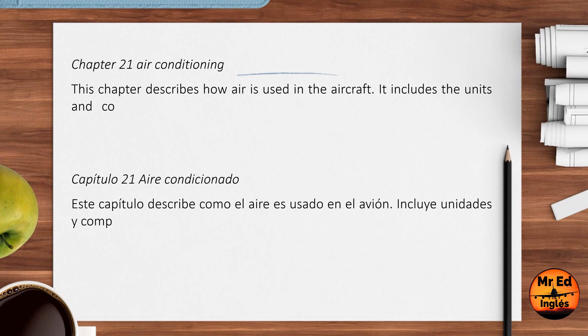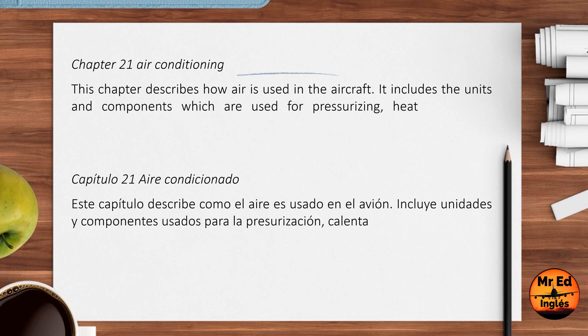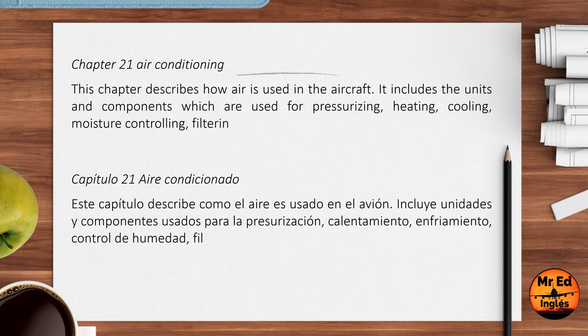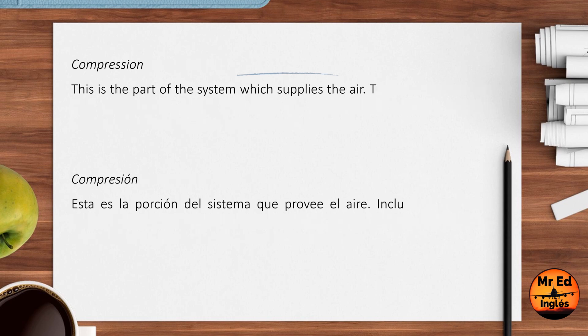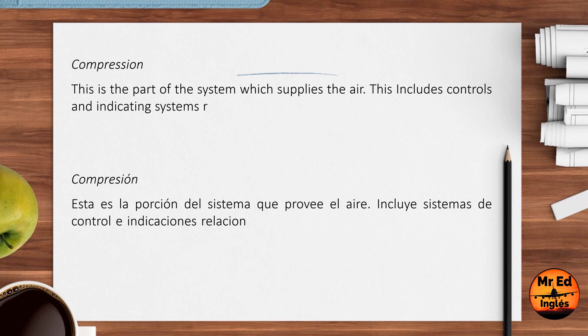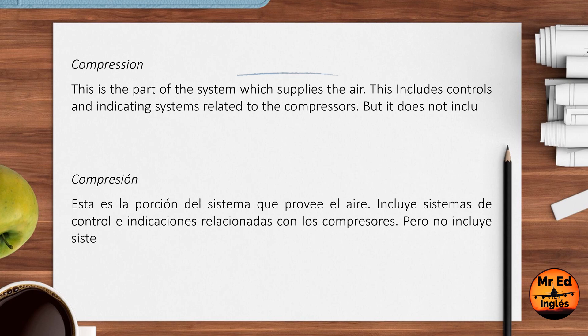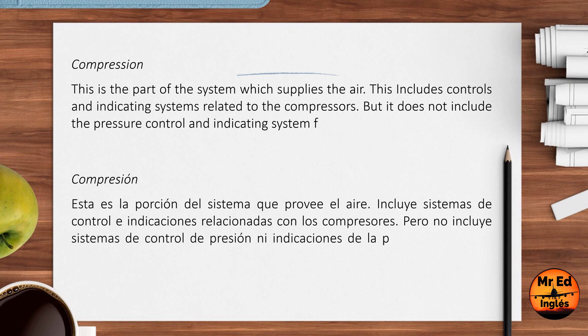This chapter describes how air is used in the aircraft. It includes the units and components which are used for pressurizing, heating, cooling, moisture controlling, filtering and treating the air. Compression: this is the part of the system which supplies the air. This includes controls and indicating systems related to the compressors, but it does not include the pressure control and indicating system for the cabin pressurization.